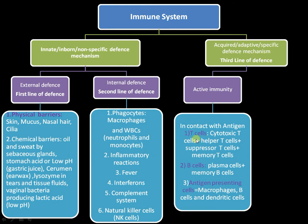Active immunity is the process by which an antigen or pathogen comes into direct contact with immune cells. The cells involved in active immunity are called lymphocytes, which include T-cells and B-cells. T-cells include cytotoxic T-cells, helper T-cells, suppressor T-cells, and memory T-cells. Cytotoxic T-cells can directly kill infected cells, while helper T-cells are the commanders of the immune system, controlling immune activity and eliciting stronger responses.